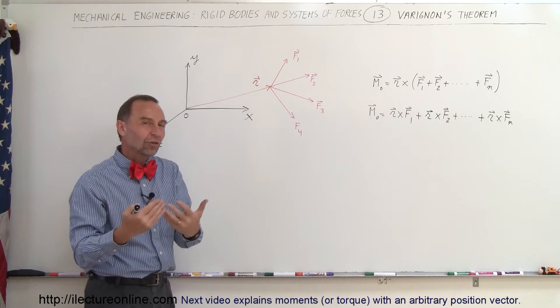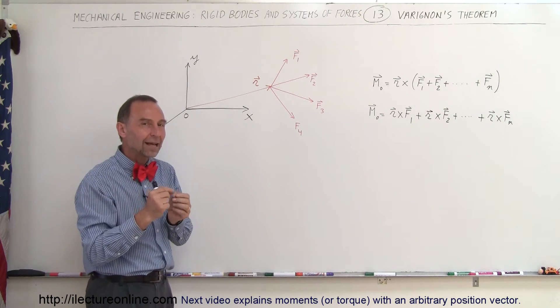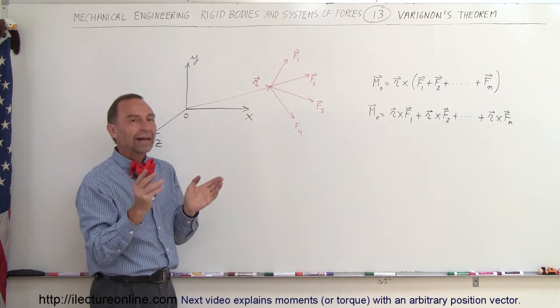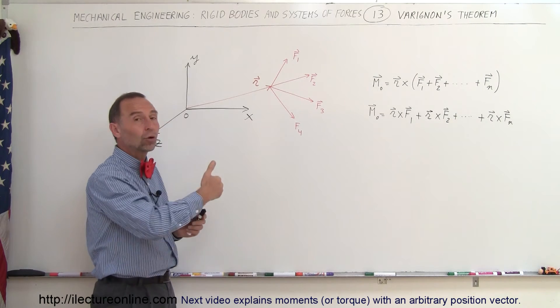So as we're going to see pretty soon in some good examples where there's multiple forces acting on a particular point, they are acting in different directions, sometimes in different locations. How do you find the total moment?